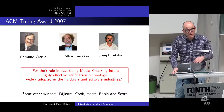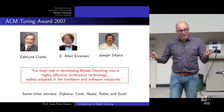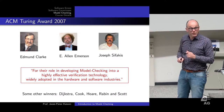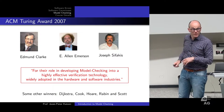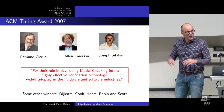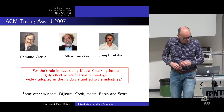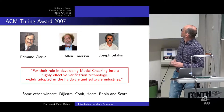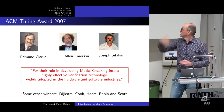The Turing Award went to Clarke, Emerson, and Sifakis. In 1981 there were two papers: one by Clarke and his PhD student Alan Emerson, and another by French researchers Joseph Sifakis in Grenoble and his student Queille. They received the Turing Award in 2007 for their role in developing model checking into a highly effective verification technique, widely adopted in hardware and software. You can see the change: 1998 it was about hardware; ten years later, also software.